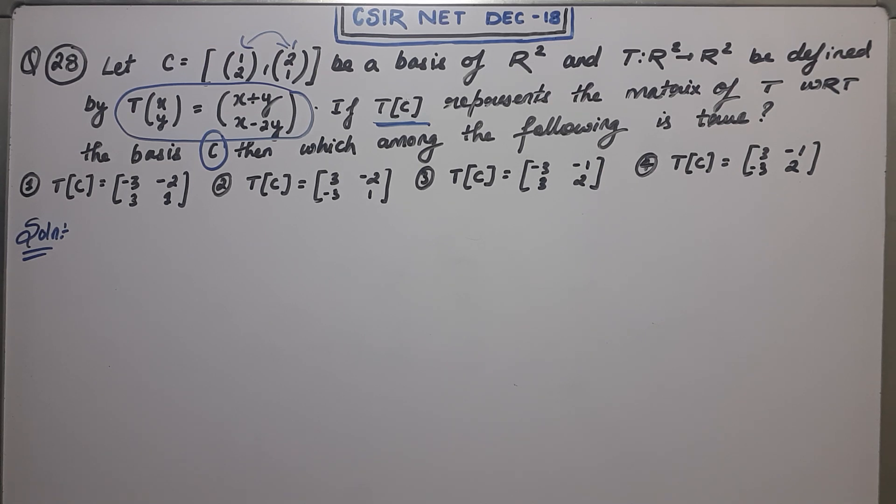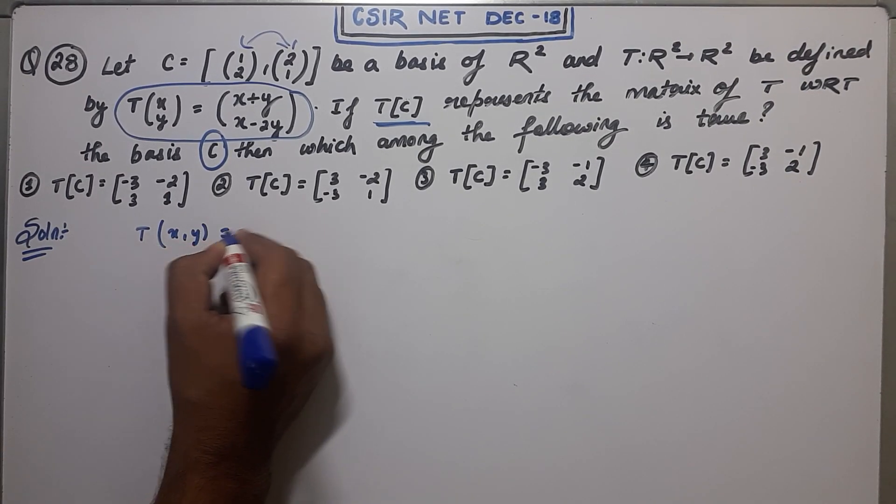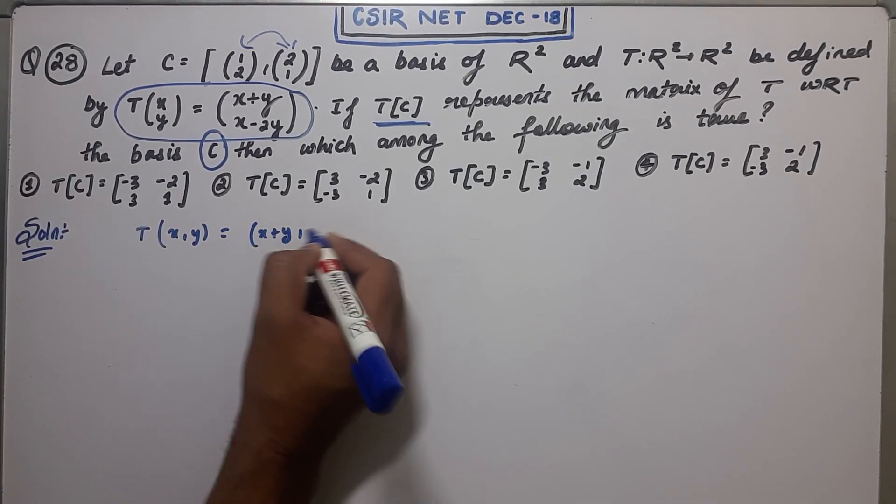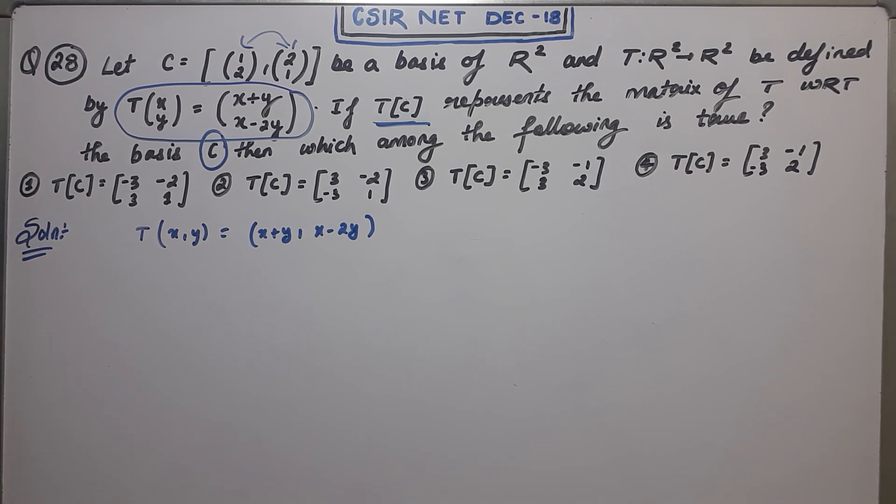It's a very easy question and we have to find the matrix of T. The formula for T is given by T(x,y) equals (x+y, x-2y). So you have to find the matrix. It's a very simple question, just calculation. So I will just do the calculation for this question.